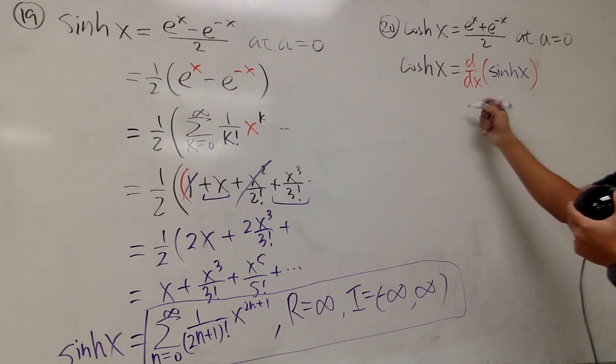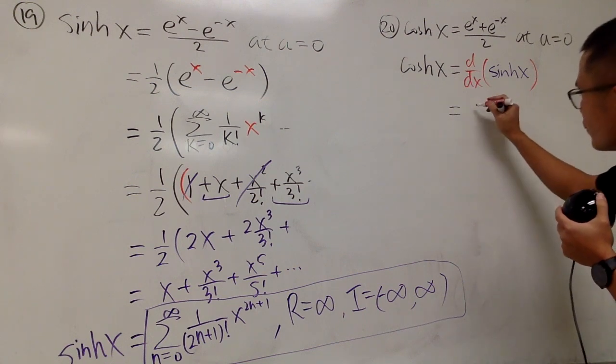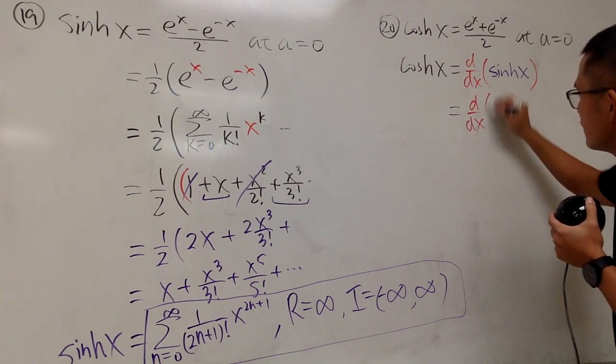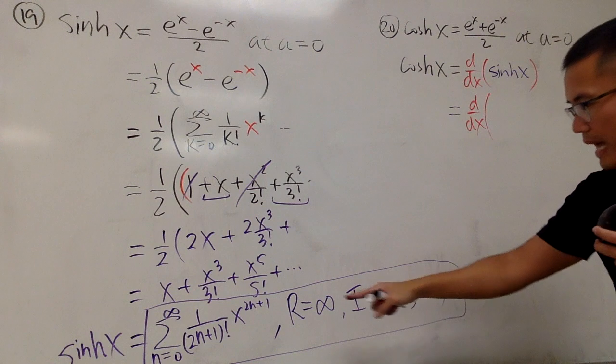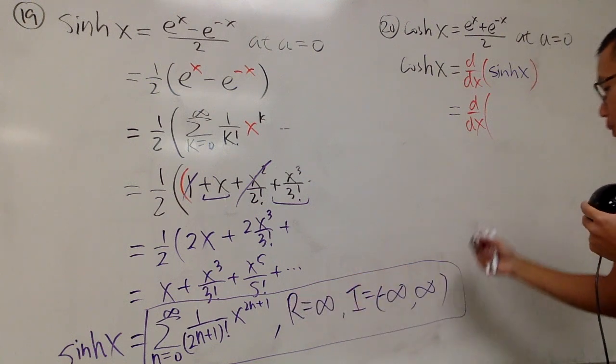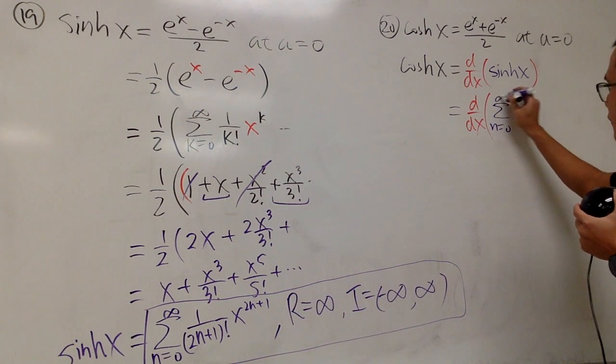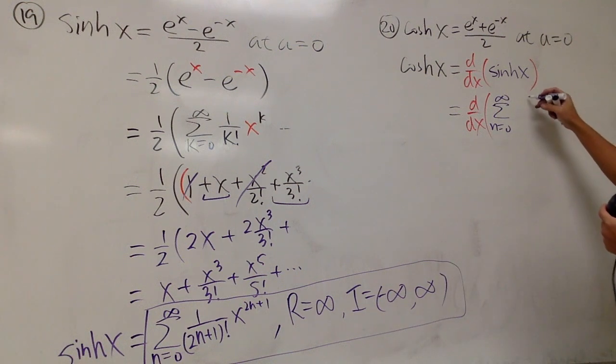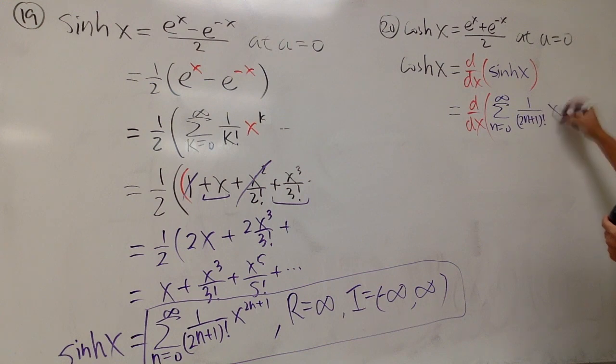But anyway, my job is to do the power series. So we will be differentiating sinh, which is that over there. I will just write down the sum, n goes from 0 to infinity, and we have 1 over 2n plus 1 factorial, and x to the 2n plus 1. And we know r is infinity, so I'll just put that down later.